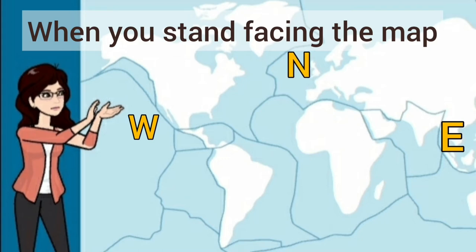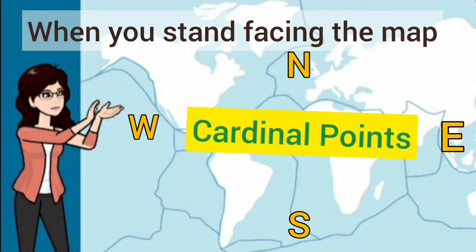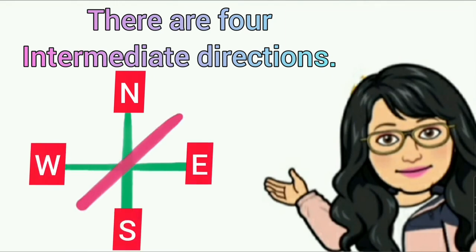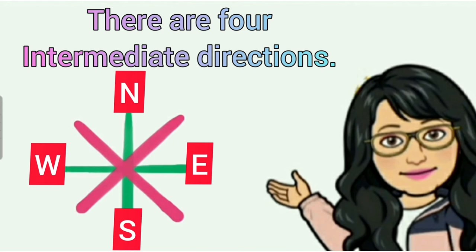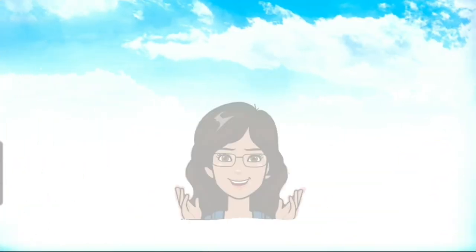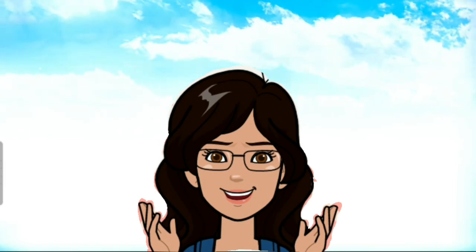These four directions — east, west, north, and south — are called cardinal points. Apart from cardinal directions, there are four intermediate directions: north-east, south-east, north-west, and south-west. These intermediate directions are very helpful in locating any place more accurately.